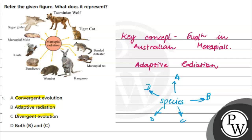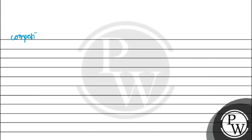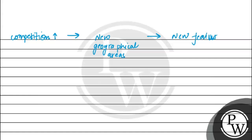What happens in adaptive radiation? When competition increases among members of the same species in a geographical area, some members migrate to new geographical areas. There, they encounter new weather and climate, develop new features, and when they reproduce over generations, these new features become part of the species, and a new species develops. This whole process is called adaptive radiation.